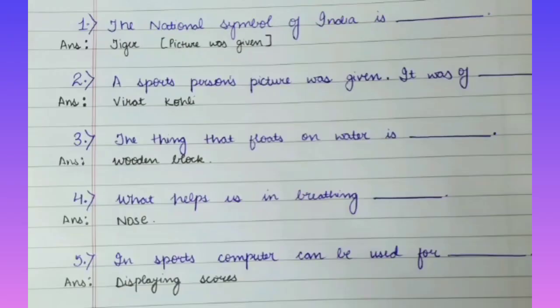Question No. 1: The national symbol of India is Dash. Answer is Tiger. Question No. 2: A sports person picture was given. Answer is Virat Kohli. Question No. 3: The thing that floats on water is Dash. Answer is Wooden Block.